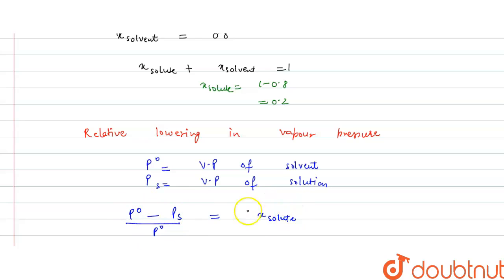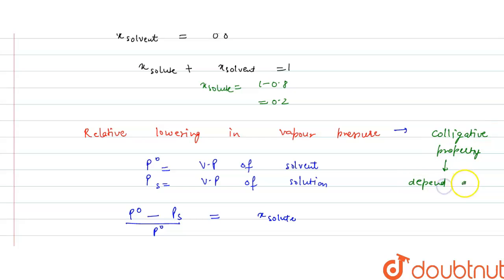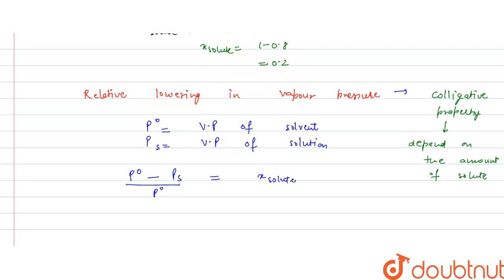This vapor pressure lowering is directly proportional to the mole fraction of solute because it is a colligative property — one that depends on the amount or number of moles of solute. Since mole fraction of solute = 0.2, the relative lowering in vapor pressure = (P0 − Ps) / P0 = 0.2.